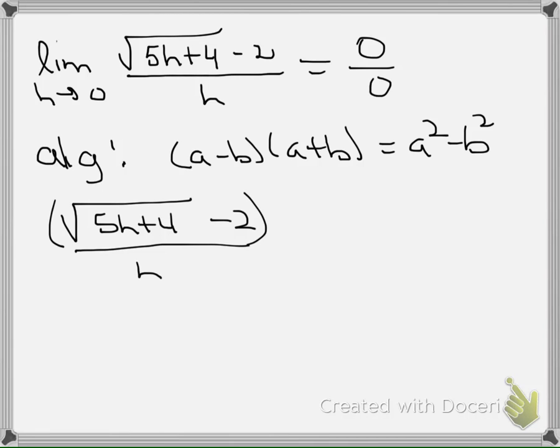And we're going to multiply the top and the bottom of this fraction by the conjugate of that square root of 5h plus 4 minus 2. So that would be the square root of 5h plus 4 plus 2.